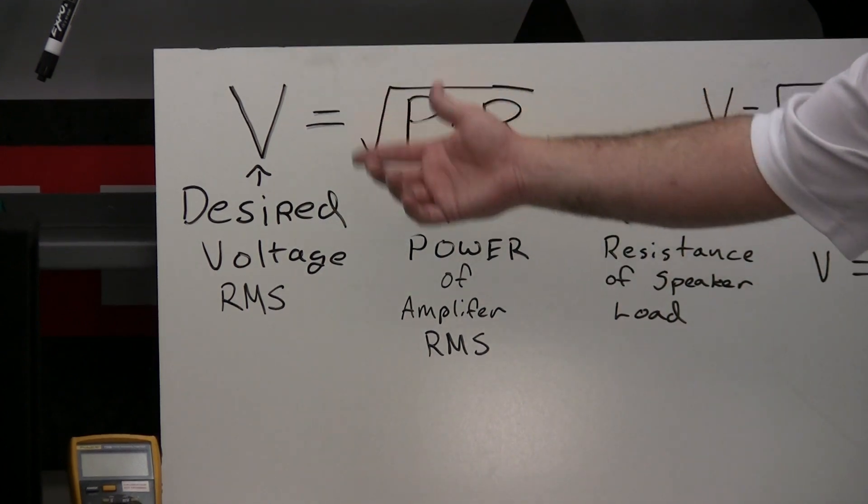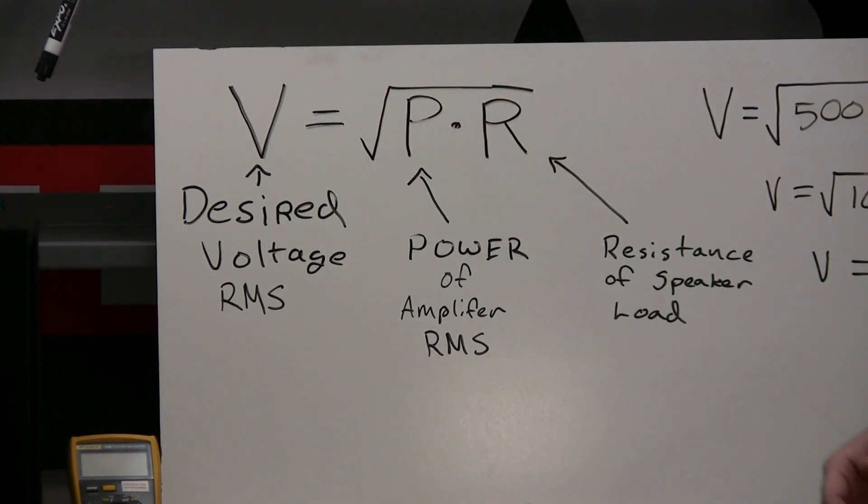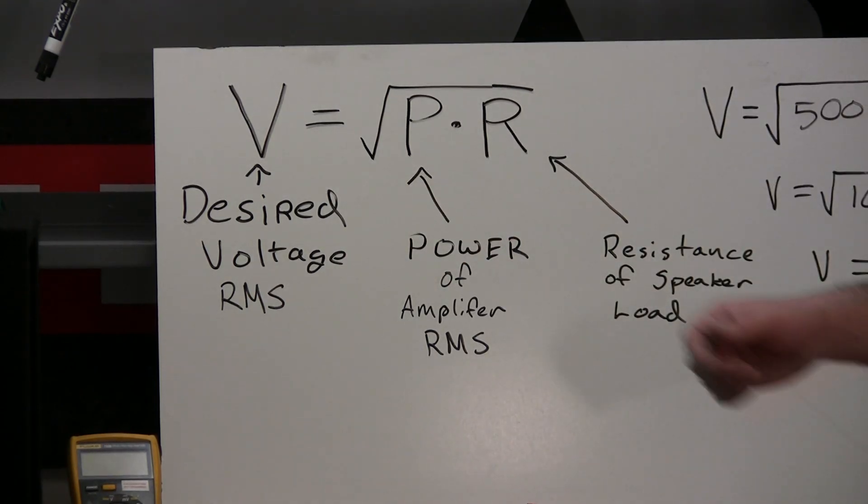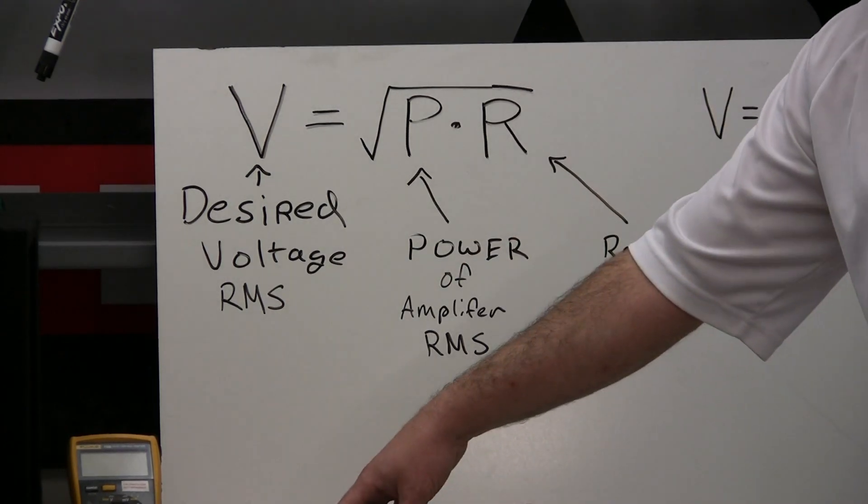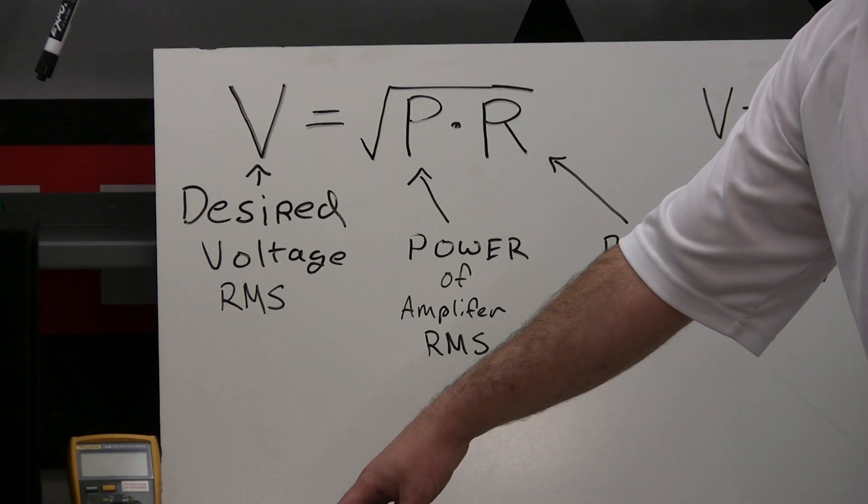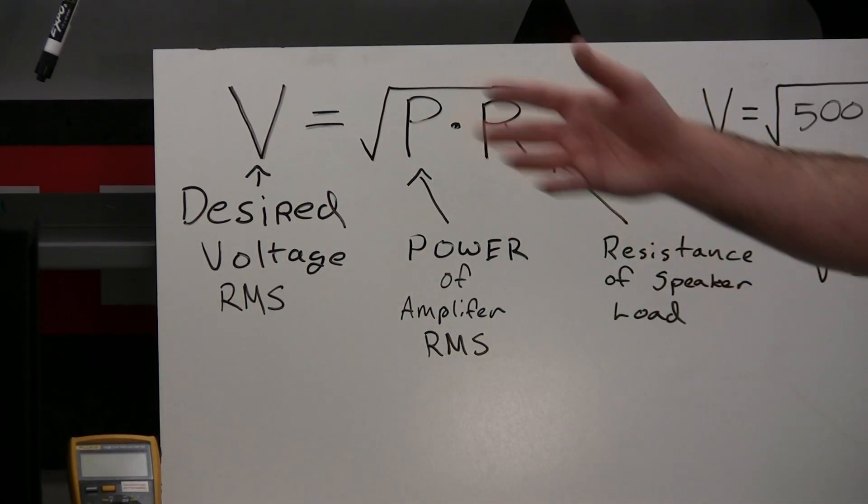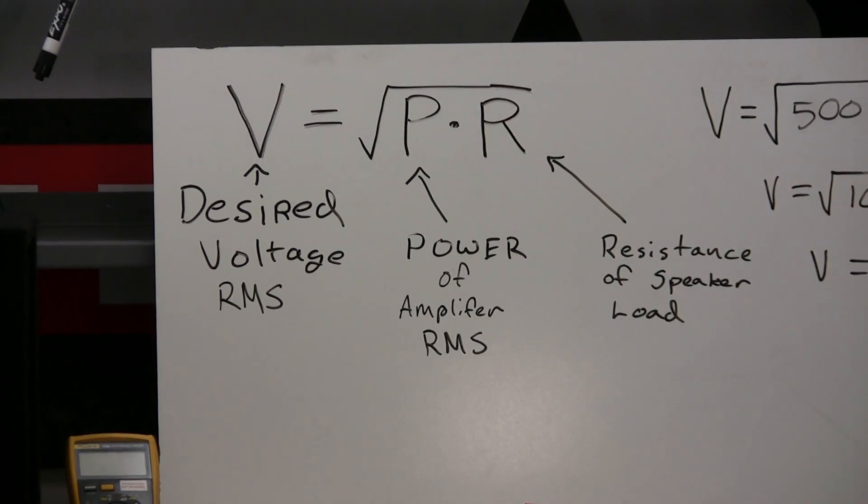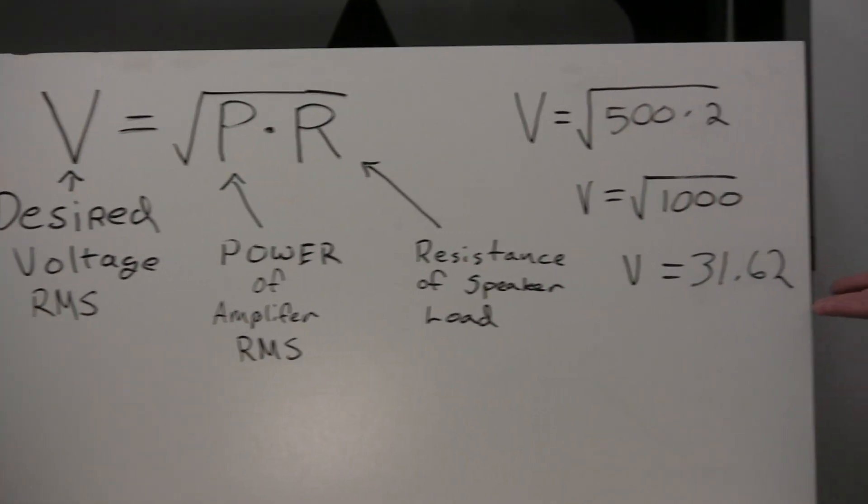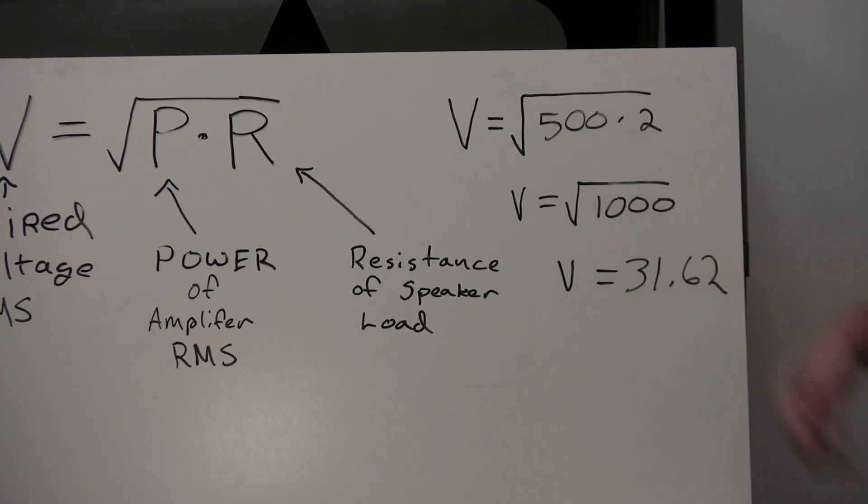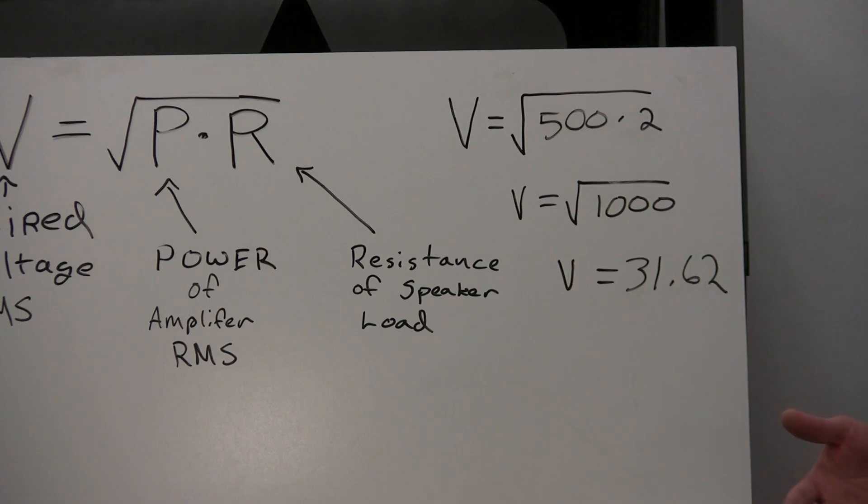To do that we're going to use this formula which is voltage equals the square root of power times resistance. Voltage being the RMS voltage out, power being the desired power out. In this case it's 500 watts, it's our RT500 here and the resistance of the speaker load which is 2 ohm load. So expressed quickly here in the math, it's 500 times 2 which is the square root over 1000. It's a desired output of 31.62 volts.